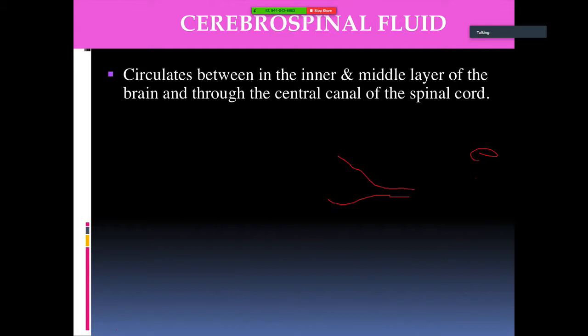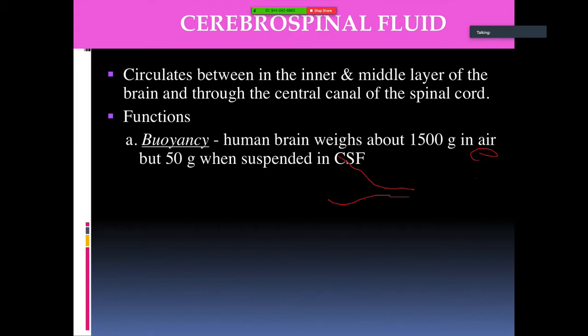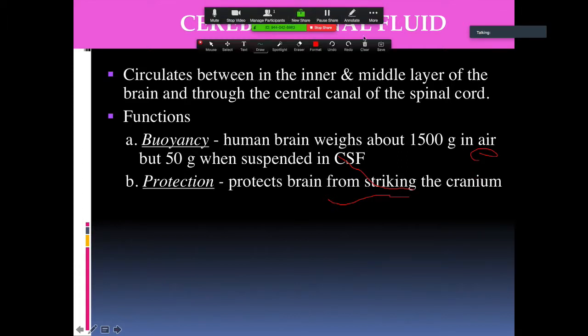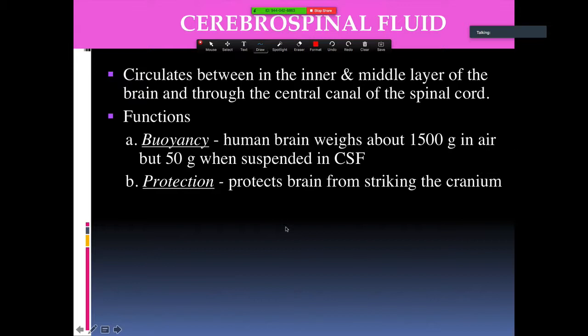Cerebrospinal fluid (CSF) circulates between the inner and middle layers of the brain and through the central canal of the spinal cord. One function of CSF is buoyancy — the human brain weighs about 1500 grams in air but only 500 grams when suspended in CSF. CSF also protects the brain from striking the cranium, acting as a hydraulic protective layer.